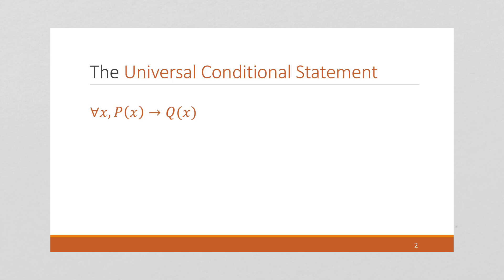We say for all x, if p of x is true, then q of x is true. And it doesn't look like it, but it might very well be the most important type of statement in mathematics.